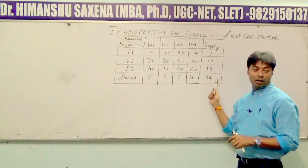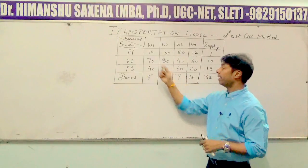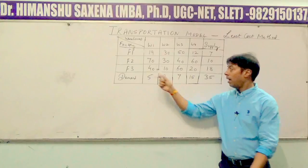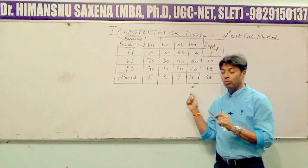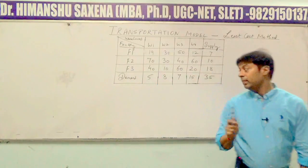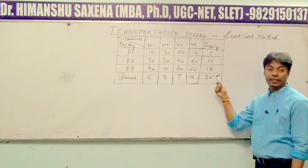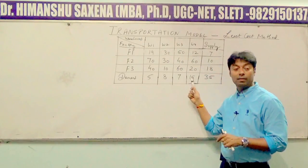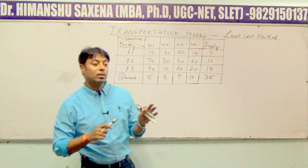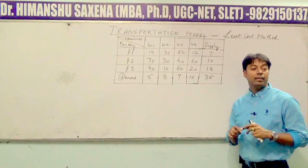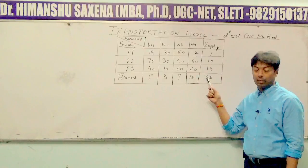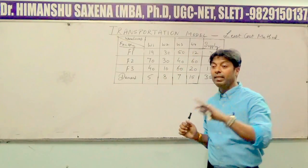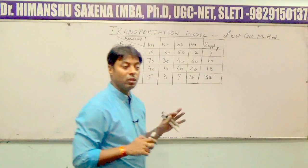Supplies and demands represent quantities. Factory 1 is supplying 7 units, factory 2 is supplying 10 units, and the third factory is supplying 18 units. You need to transport these 35 total units to all 4 warehouses in such a manner that their demands are satisfied and the transportation cost comes out to be minimum. That is the idea behind this model.